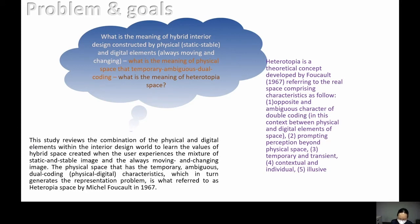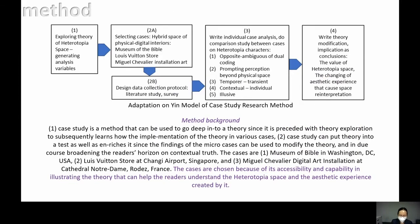What is the meaning of hybrid interior design constructed by physical elements and digital elements that are always moving and changing? What is the meaning of that physical space that has temporary, ambiguous, dual-coding characteristics? This study reviews the combination of physical and digital elements in interior design to learn the value of hybrid space created when users experience the mixture of static stable images with moving, changing images.